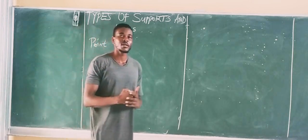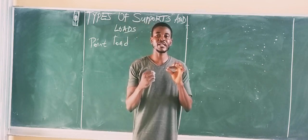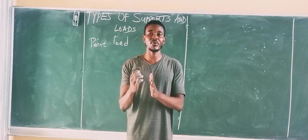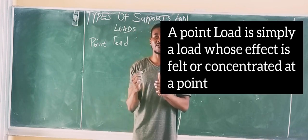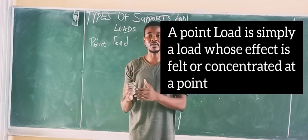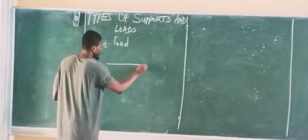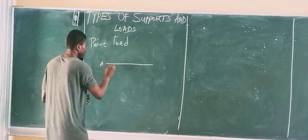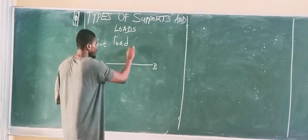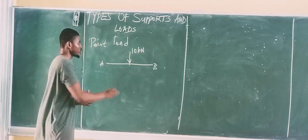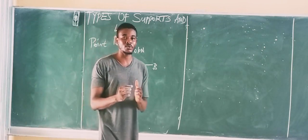What is a point load? A point load is simply a concentrated load — just a single load acting at a particular point. It's called a point load because the entire effect of the load is felt at a particular point. For instance, if we have a beam A to D and a load of 10 kN acting at point C, those 10 kN are called a point load.